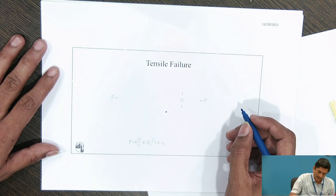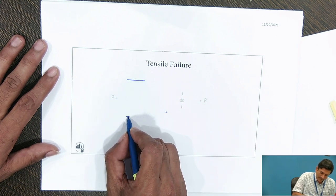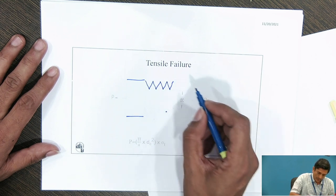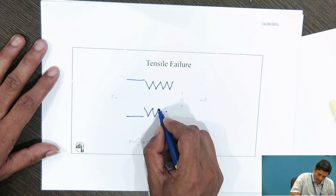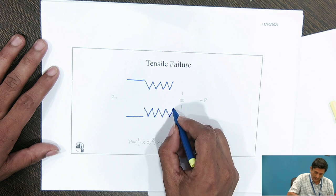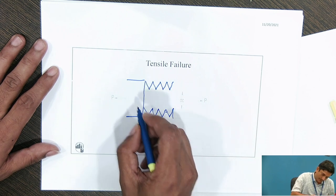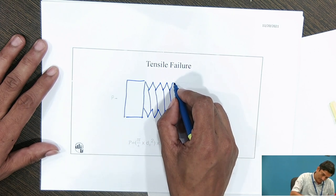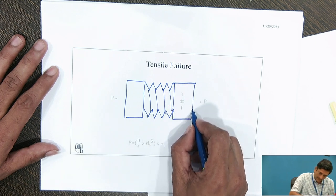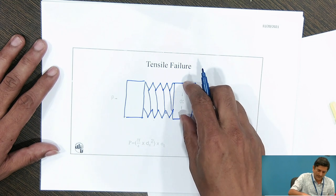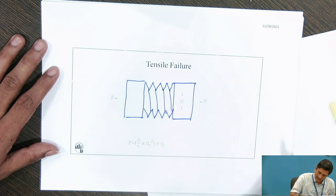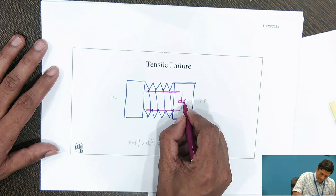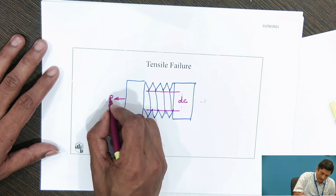A typical case of tensile failure. Let us consider that it is a threaded component. I will show threads over here. We usually do not show threads, we use conventions, but for drawing this component and finding out its design equation, it is essential for me to draw these threads. This is a screw thread. This is the shank diameter and this is the core diameter. The core diameter is over here and the component is loaded in tension.